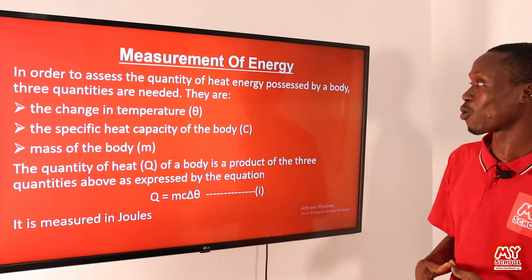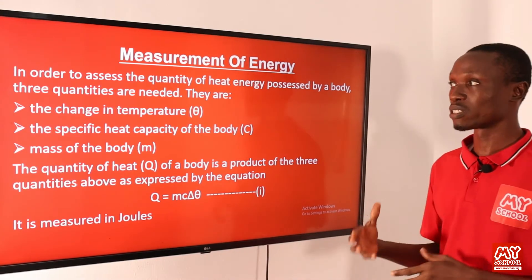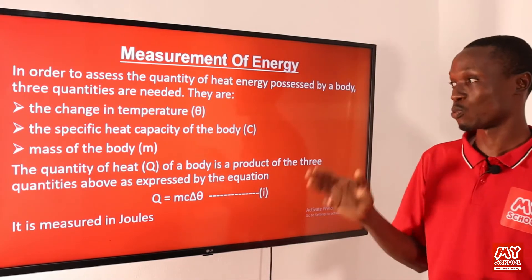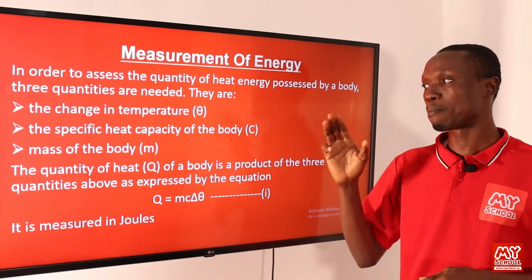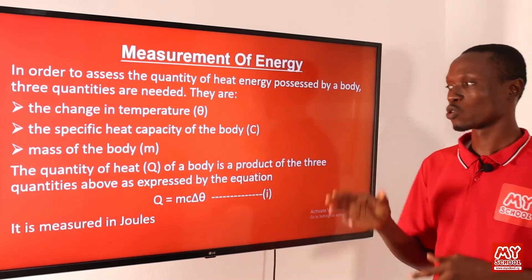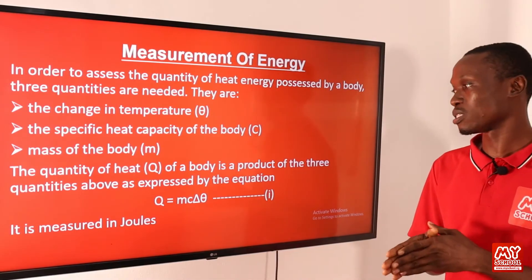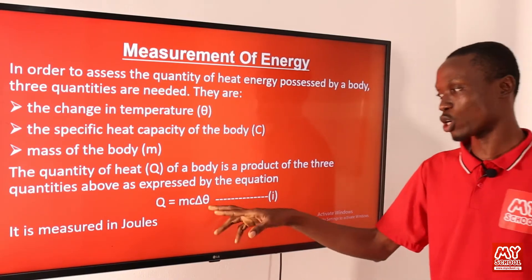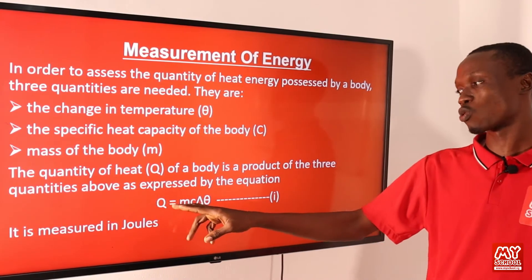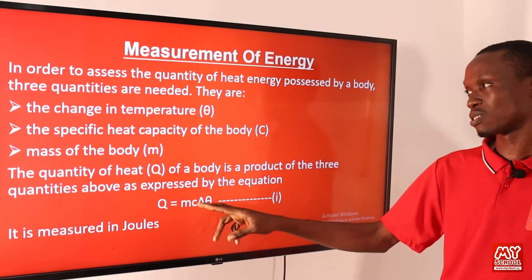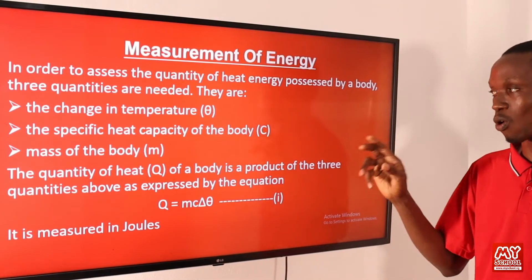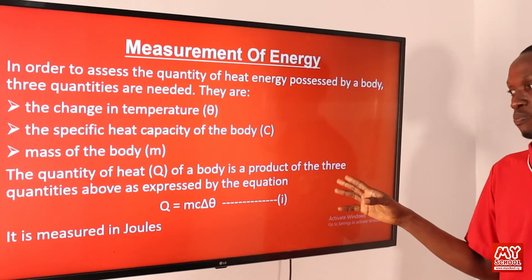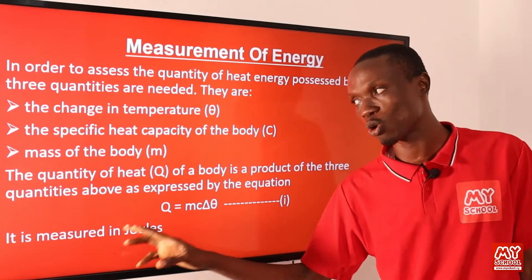In order to assess the quantity of heat energy possessed by a body, three quantities are needed: the change in temperature, the specific heat capacity of the body, and the mass of the body. The quantity of heat of a body is a product of these three quantities, expressed as Q = mcΔθ, where m is the mass, c is the specific heat capacity, and Δθ is the change in temperature. Quantity of heat is measured in joules.